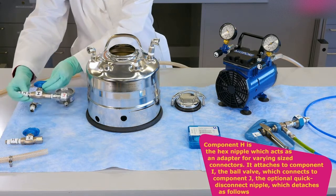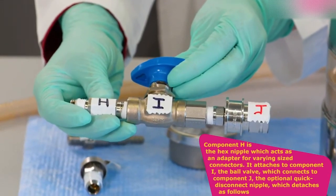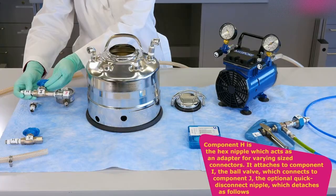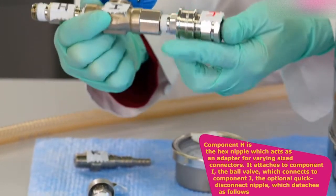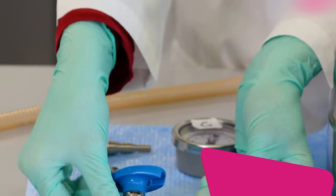Component H is the hex nipple, which acts as an adapter for varying sized connectors. It attaches to component I, the ball valve, which connects to component J, the optional quick disconnect nipple, which detaches as follows.